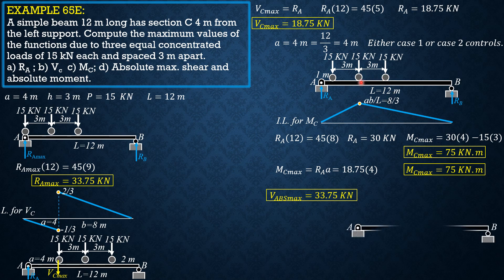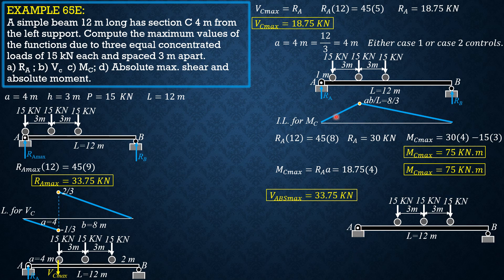Absolute maximum moment occurs at the center of the beam when the center load is also over the center, as shown in the figure. There is a formula I derived: 3PL/4 − PH — but I will not use that. By symmetry, the reaction at A equals (15 + 15 + 15)/2 = 45/2 kilonewtons, with 3 meters on each side of center so the beam totals 12 meters.